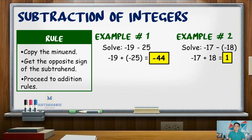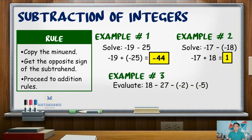For another example: 18 minus 27 minus negative 2 minus negative 5. Changing all the signs of the subtrahends, we now have 18 plus negative 27 plus positive 2 plus positive 5.